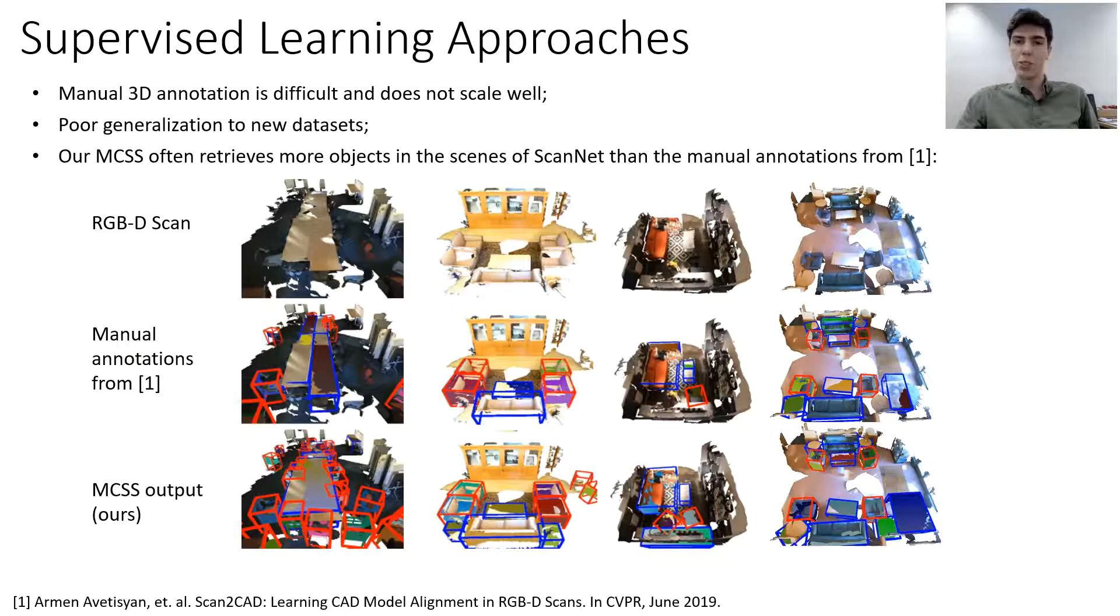Supervised learning approaches for 3D Scene Understanding inherit the bias of manual 3D annotation, which is difficult to obtain and doesn't scale well. Also, supervised learning approaches often generalize poorly to new datasets. In contrast, MCSS often retrieves more objects in the scenes of ScanNet than the existing manual annotation.